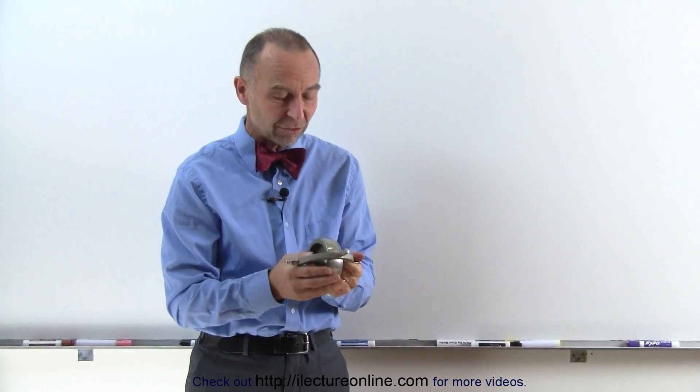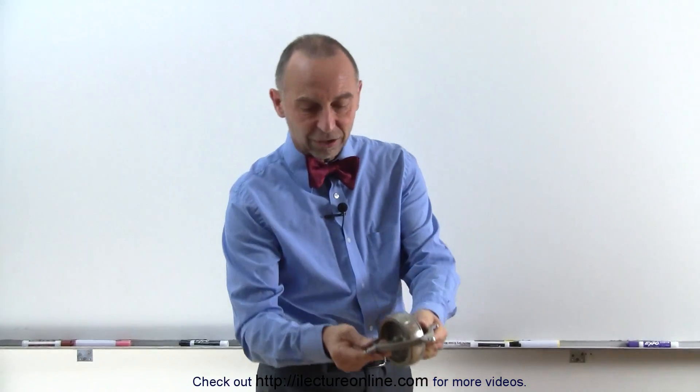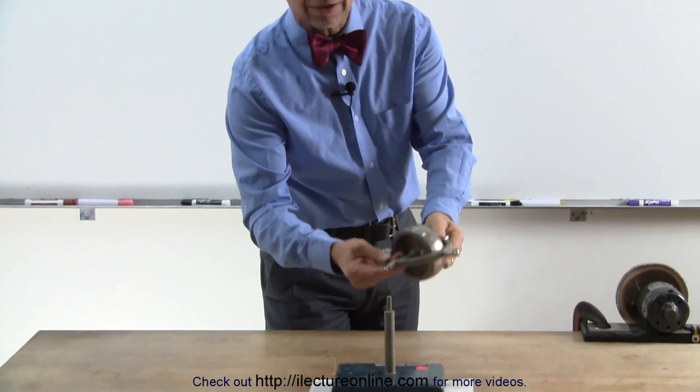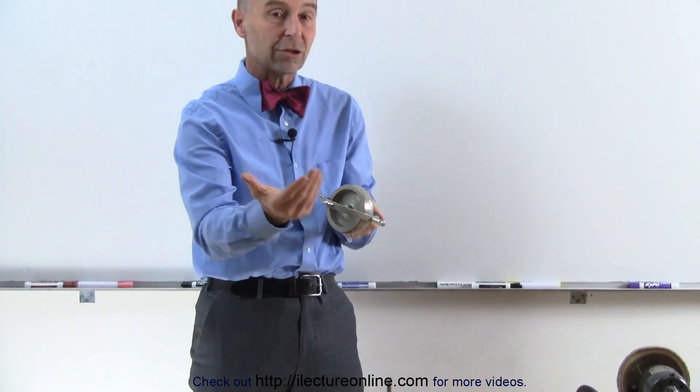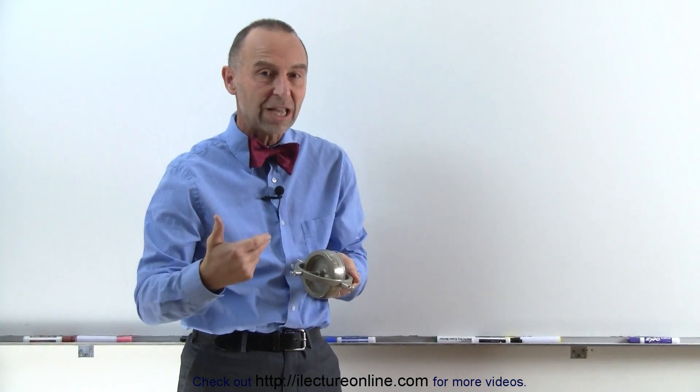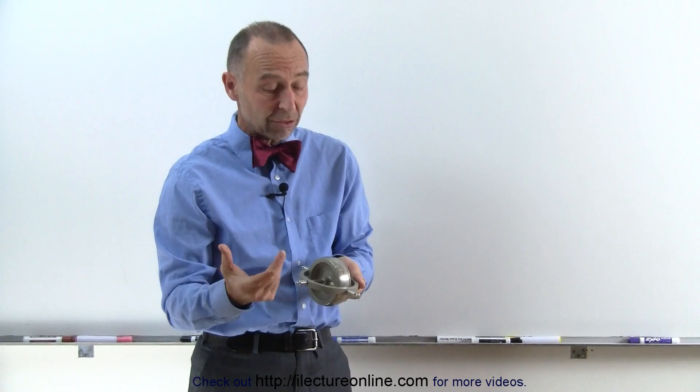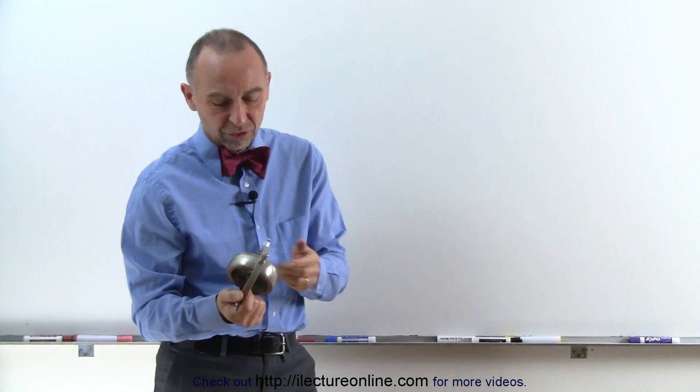it creates a very large angular momentum, and then when I place this gyroscope on this stand right here, it will cause a torque. The torque will then cause the angular momentum to change, and the changing angular momentum will then cause what we call a precessional rotation or precessional velocity.